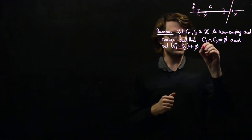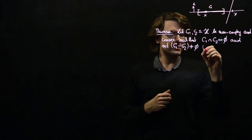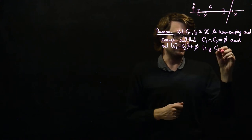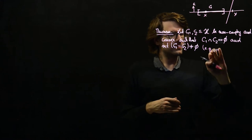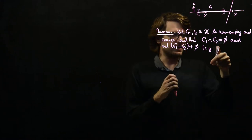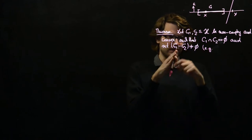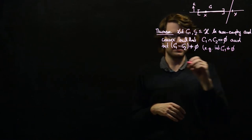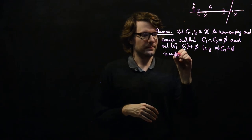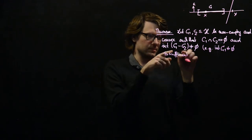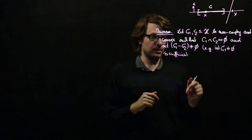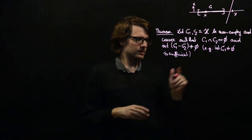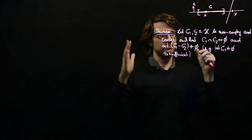Just as a reminder: for example, requiring that one of the sets has non-empty interior is sufficient for this. So if the interior of C1 is non-empty, that is sufficient to ensure that C1 minus C2 also has non-empty interior.